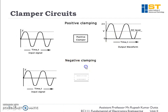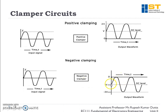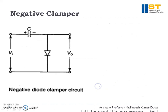In a negative clamping circuit, if we supply this signal to the clamper circuit, we will get an output voltage which is clamped down by this magnitude of voltage V. In this negative clamper circuit, the DC level is shifted down by magnitude V, so the highest magnitude is 0 and the lowest magnitude is minus 2V.